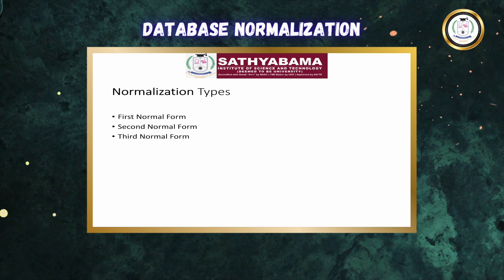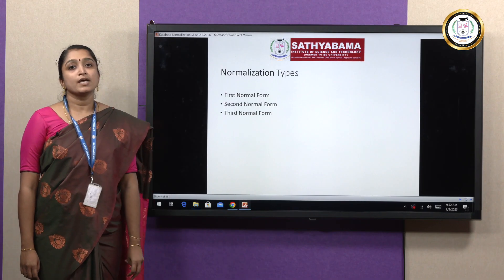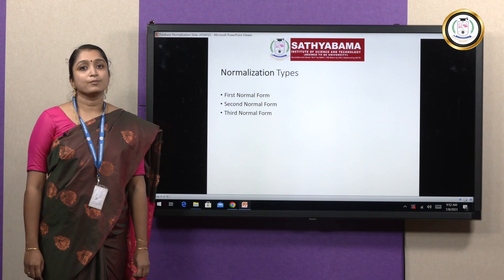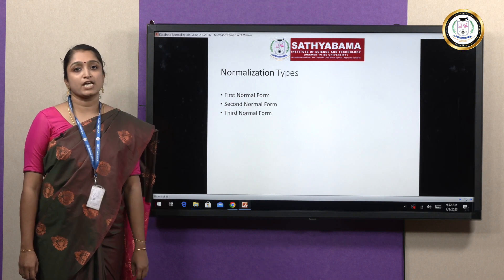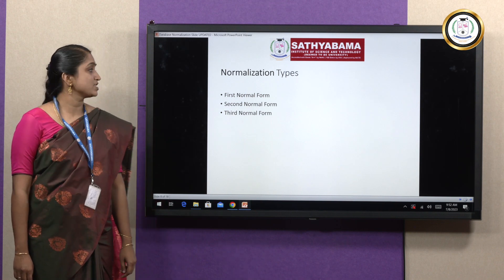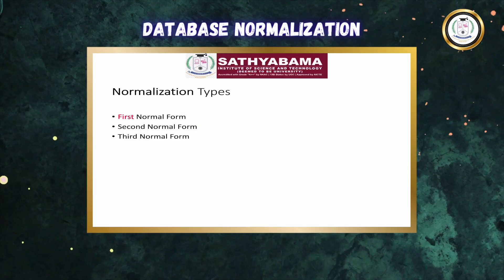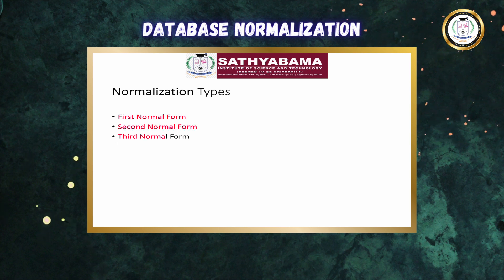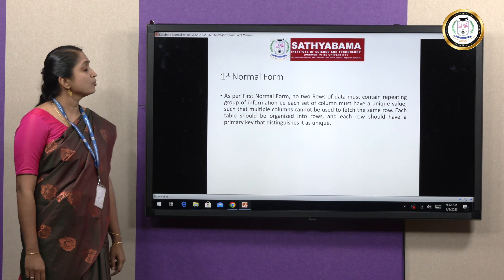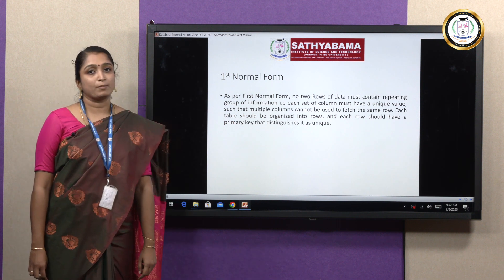Let us see the various types of normalization. There are many types, but in this lecture I am going to discuss only three: the first normal form, the second normal form, and the third normal form. Let us move on to the first normal form.